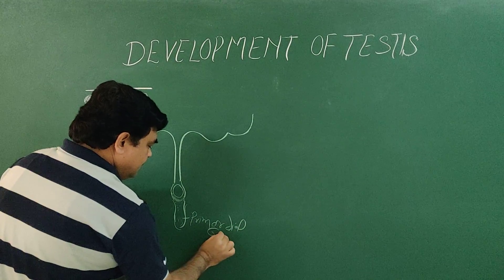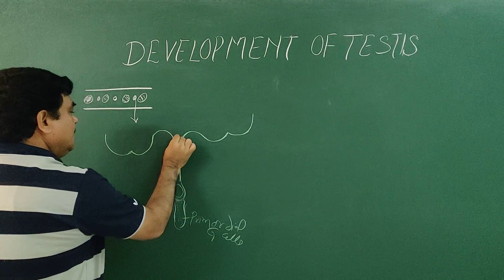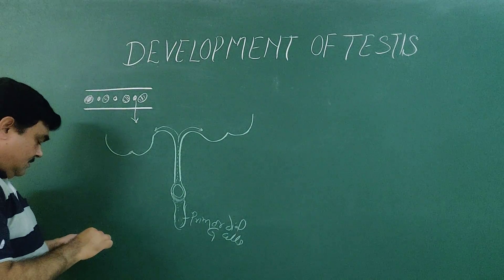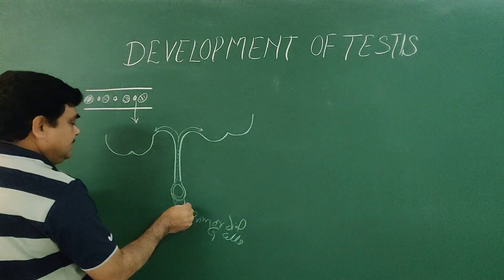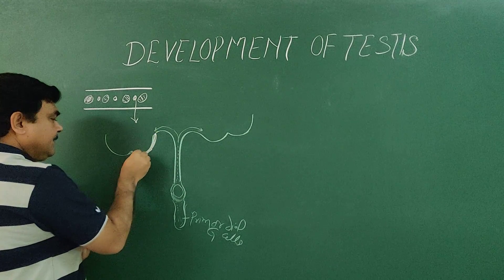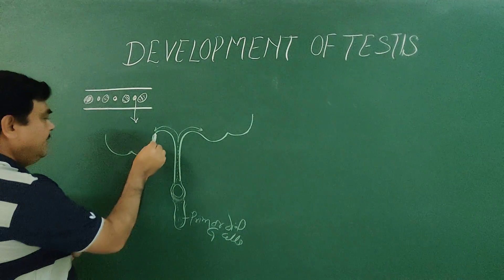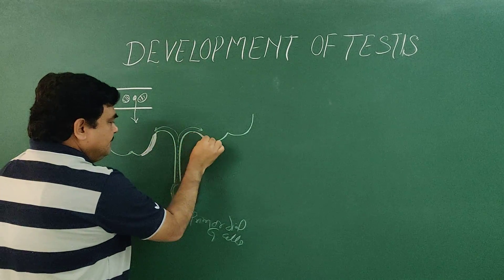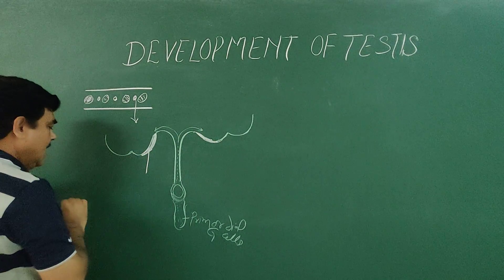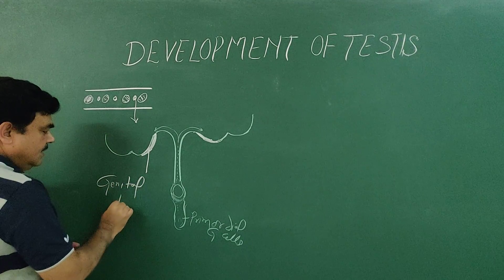Primordial germ cells pass through the gut and reach the area where the gonads develop. These are primordial germ cells arriving at the medial side of the nephrogenic cord. This part of the coelomic epithelium becomes thickened and forms the genital ridge.